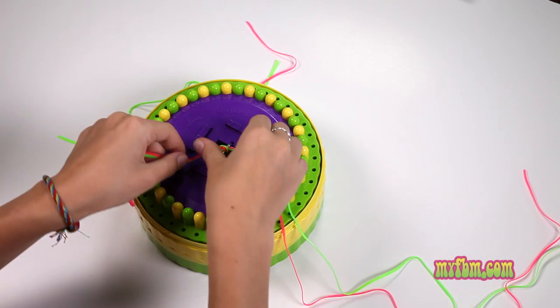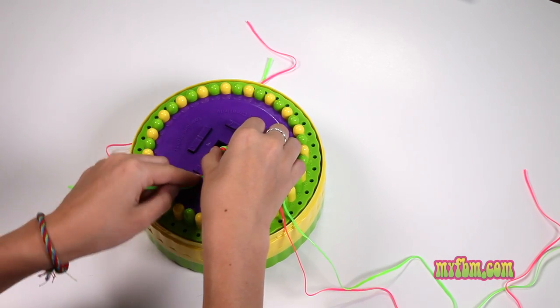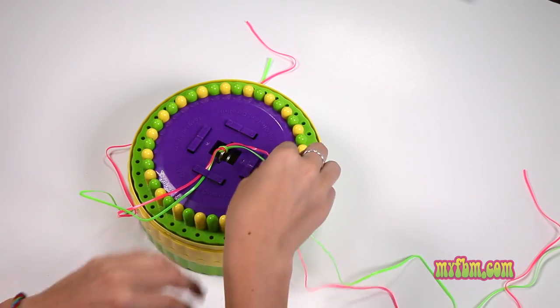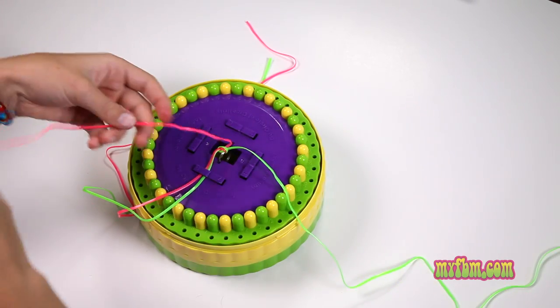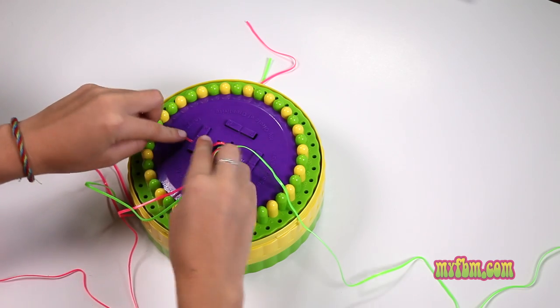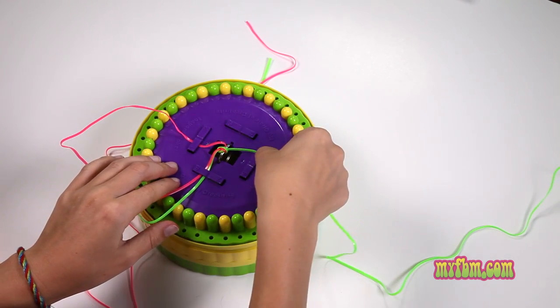Take your pink and your green lace and place it under the number eight holder. These strings will stay in place. Next take your pink lace and place it under the number one and your green lace under the number five.